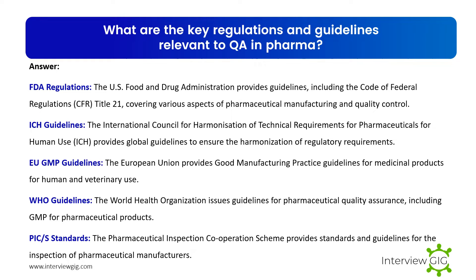What are the key regulations and guidelines relevant to QA in pharma? FDA regulations: the U.S. Food and Drug Administration provides guidelines including the Code of Federal Regulations (CFR) Title 21, covering various aspects of pharmaceutical manufacturing and quality control. ICH guidelines: the International Council for Harmonization (ICH) provides global guidelines to ensure harmonization of regulatory requirements. EU GMP guidelines: the European Union provides good manufacturing practice guidelines for medicinal products for human and veterinary use. WHO guidelines: the World Health Organization issues guidelines for pharmaceutical quality assurance including GMP for pharmaceutical products. PICS standards: the Pharmaceutical Inspection Cooperation Scheme provides standards and guidelines for the inspection of pharmaceutical manufacturers.